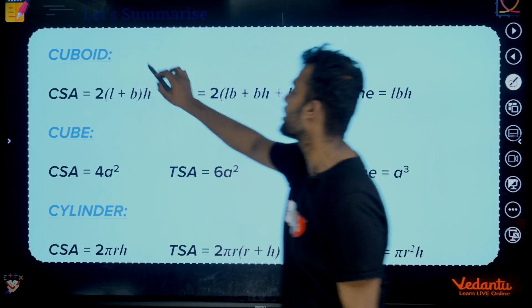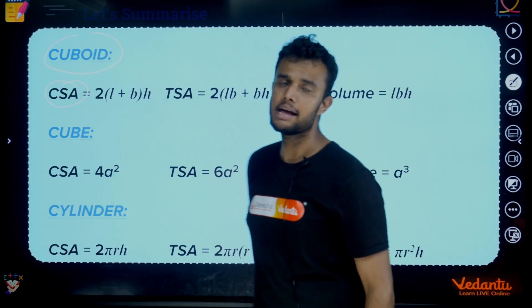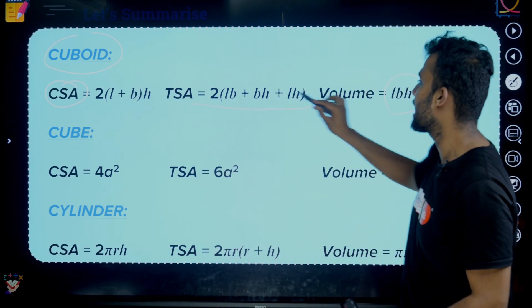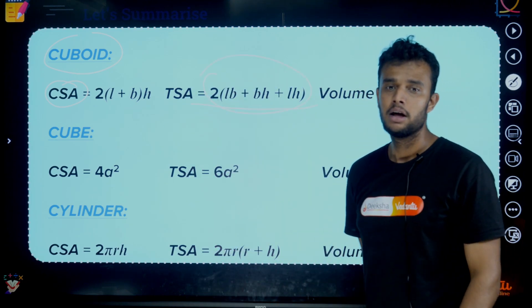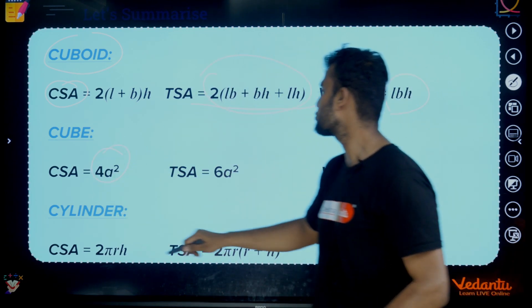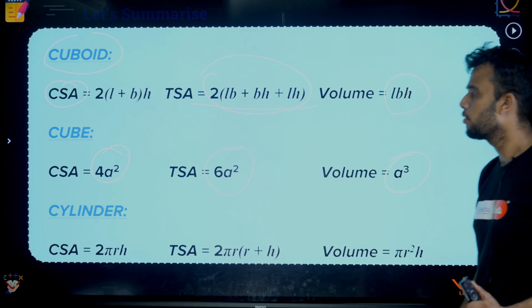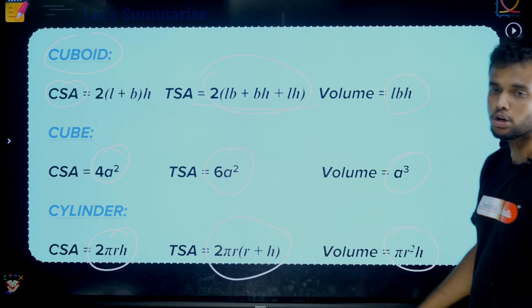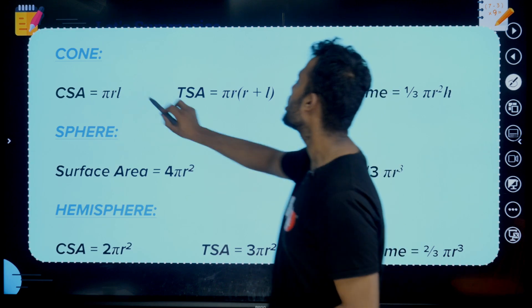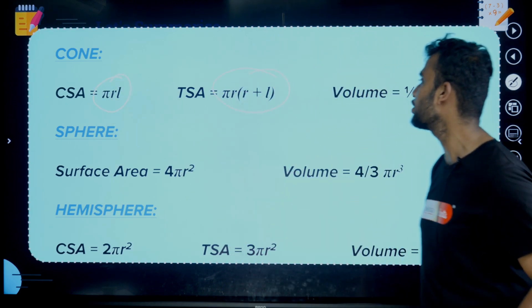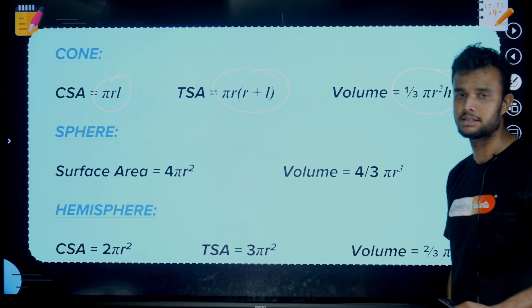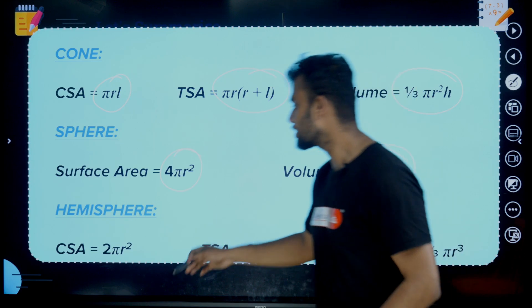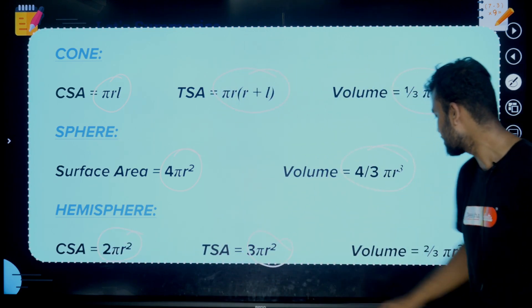Surface area and volume: For a cuboid, LSA = 2H(L + B), TSA = 2(LB + BH + LH), Volume = LBH. For a cube, CSA = 4A², TSA = 6A², Volume = A³. For a cylinder, CSA = 2πRH, TSA = 2πR(R + H), Volume = πR²H. For a cone, CSA = πRL, TSA = πR(R + L), Volume = (1/3)πR²H. For a sphere, surface area = 4πR², Volume = (4/3)πR³. For a hemisphere, CSA = 2πR², TSA = 3πR², Volume = (2/3)πR³.